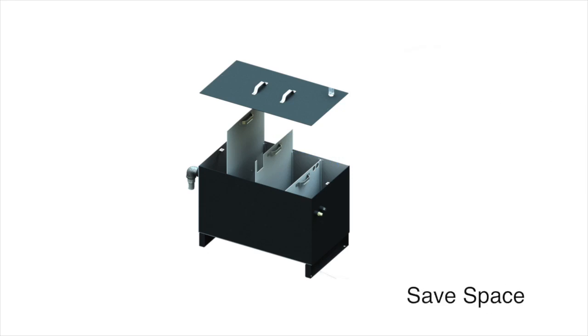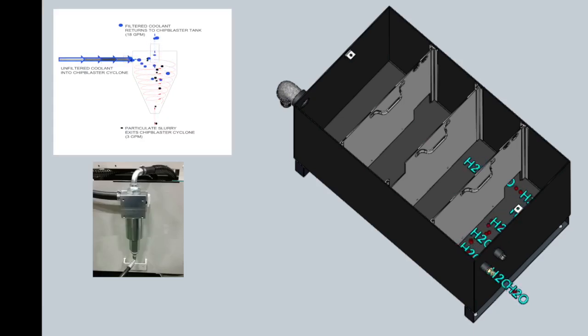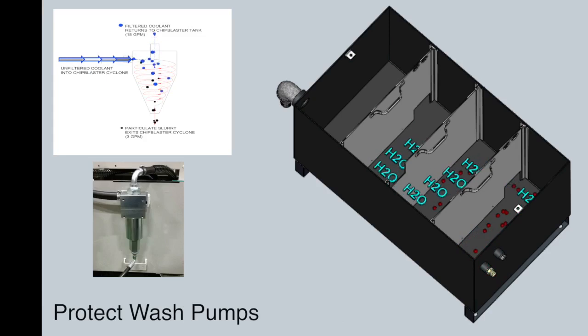This little tank is only 18 inches wide and 37 inches long. This sludge collection tank from Chip Blaster is the perfect complement to the cyclonic filtration. Now you can keep your machine tool tank clean, protect your wash pumps, and keep your coolant lines from clogging up, saving you tons of money.